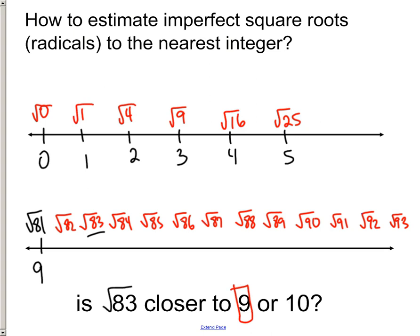So that's the beginning of estimating imperfect square roots. And that's just trying to round to the nearest whole number, which whole number is it closest to. And later, within the next couple of lessons, we'll show you how to actually take the skill and let it help you be able to round to the nearest tenth or hundredth without a calculator.